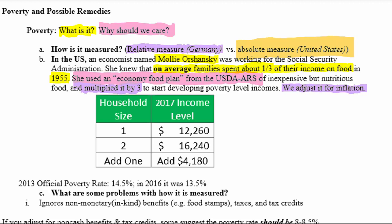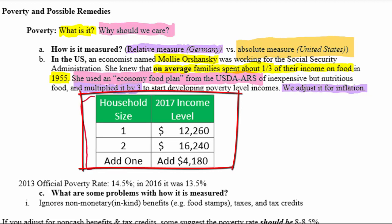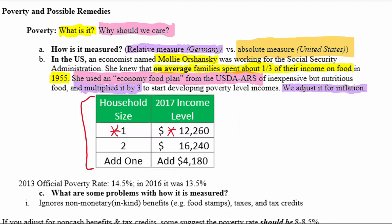In 2017, for a household of one person the poverty level income is $12,260 — sometimes called the poverty threshold. If you're at or above that number, you're not in poverty; if below, everyone in the household is determined to be in poverty. A household of two has a threshold of $16,240, and for each additional person the table adds approximately $4,180.